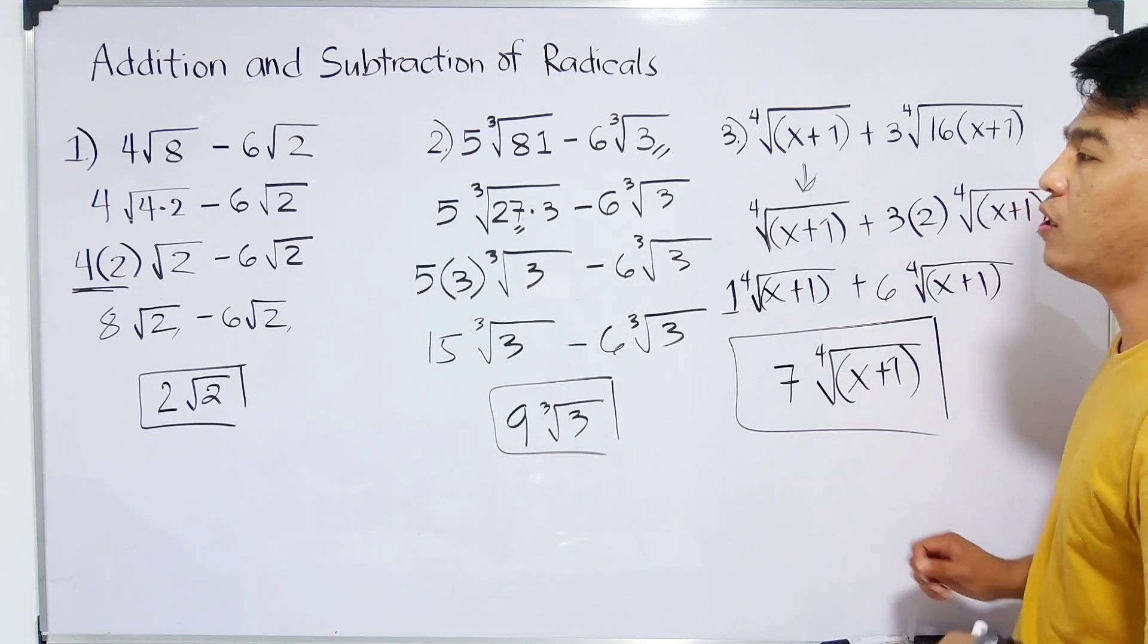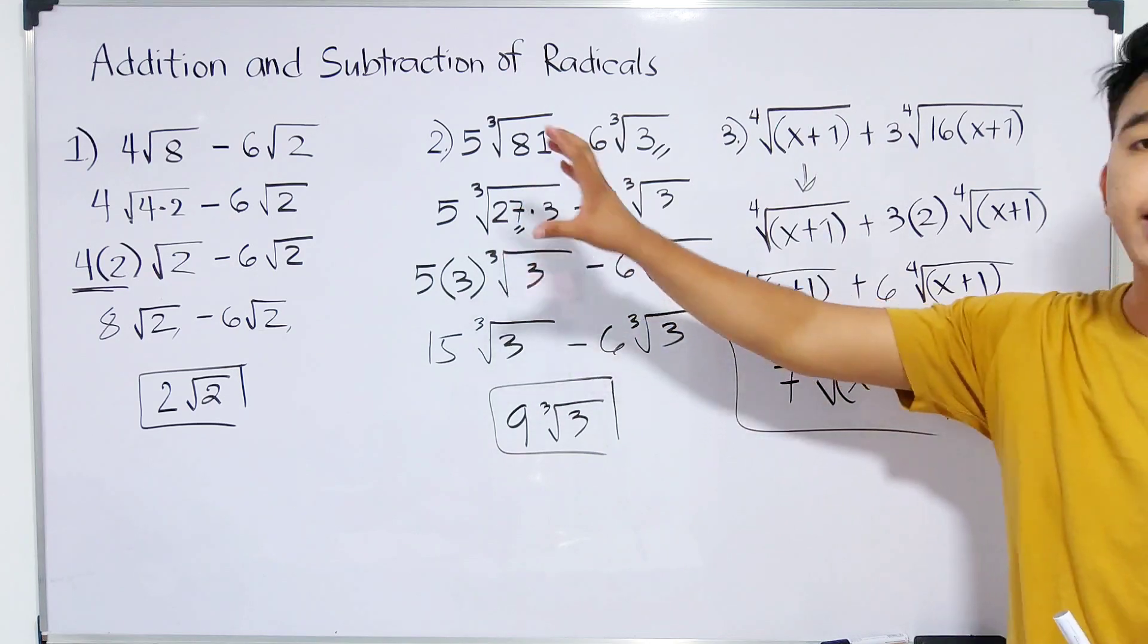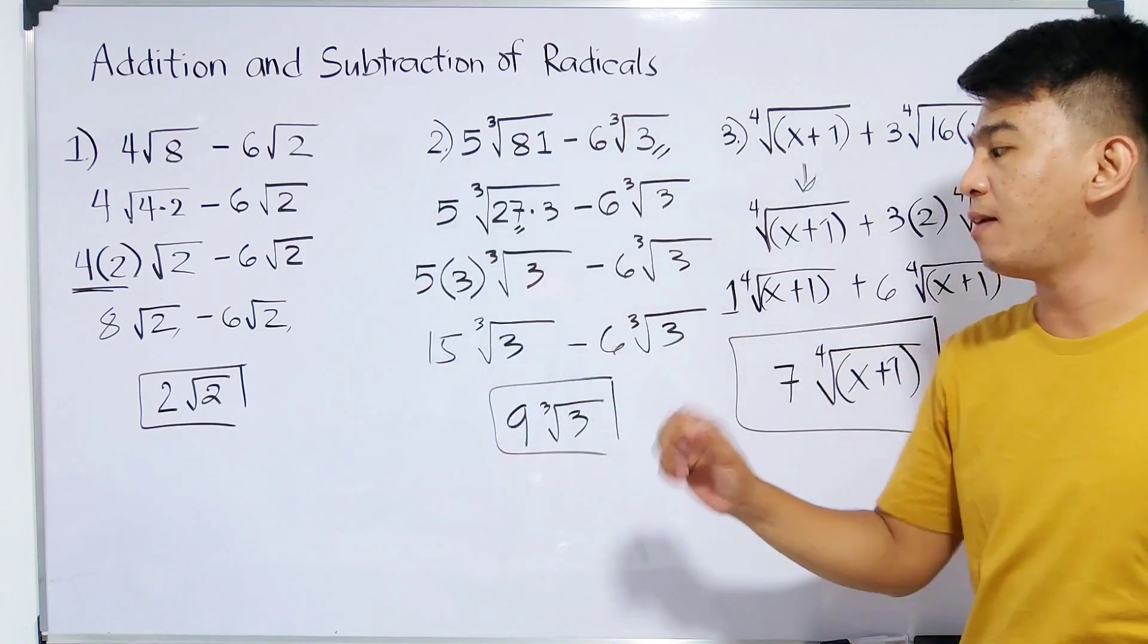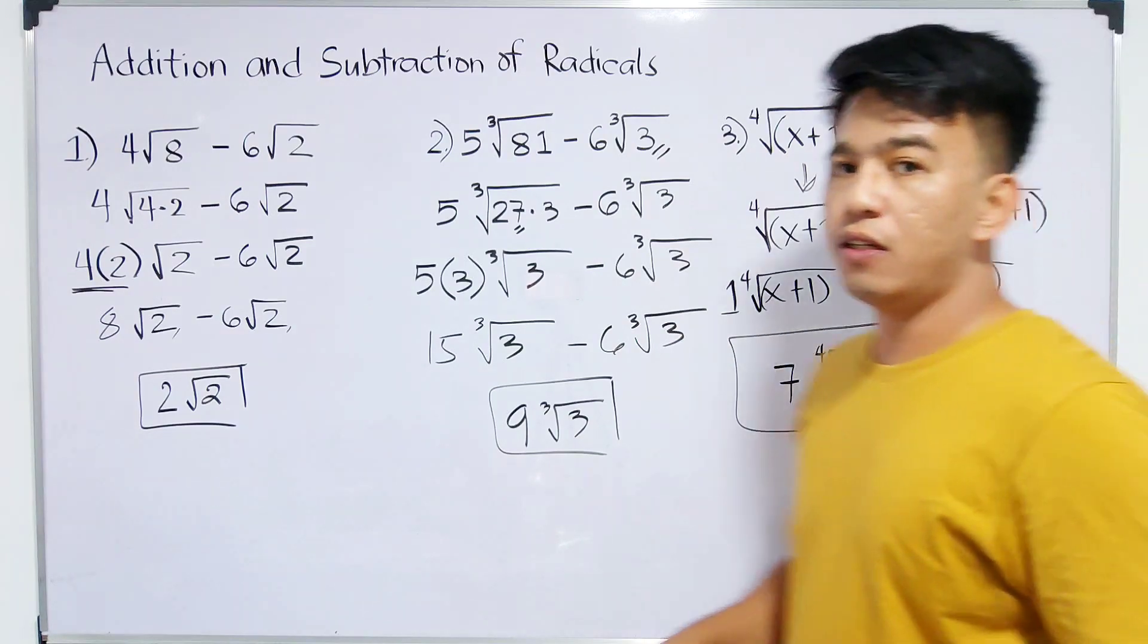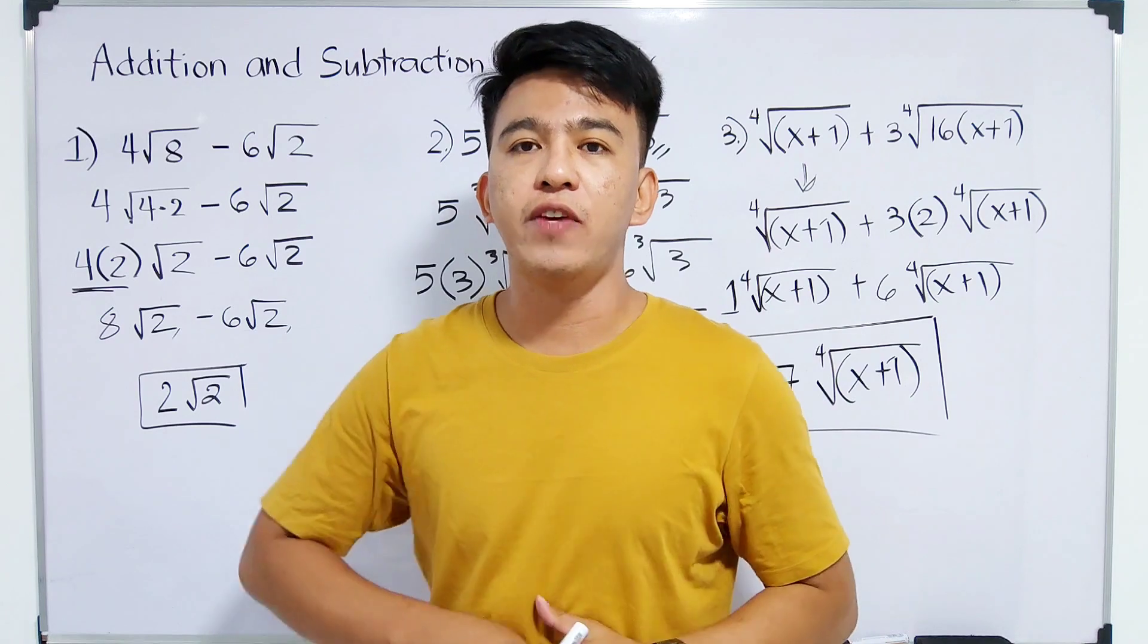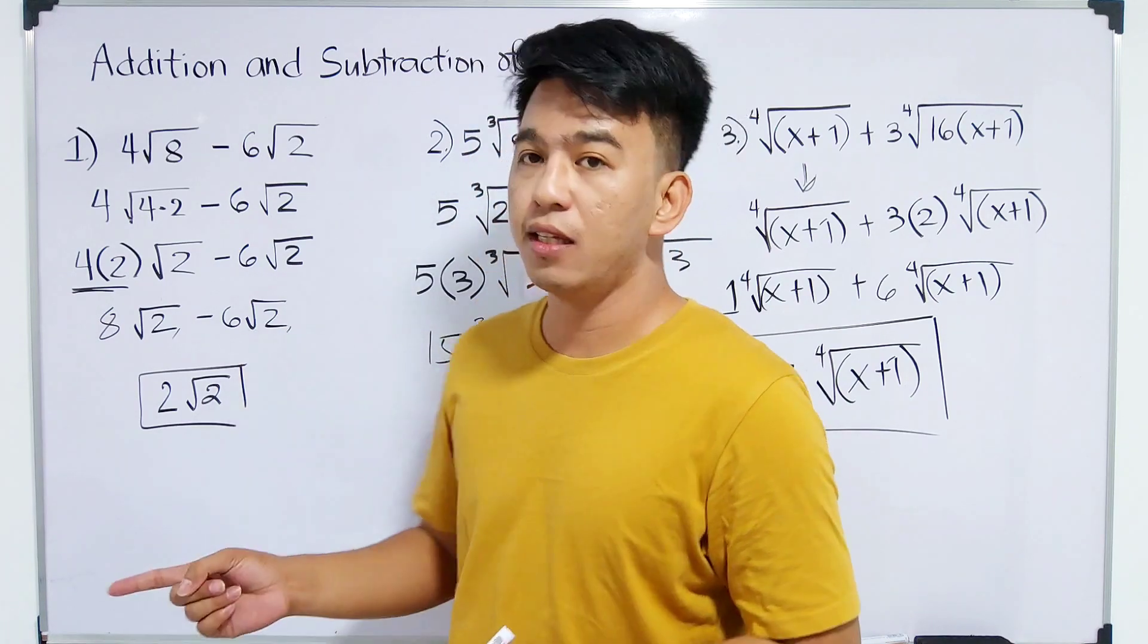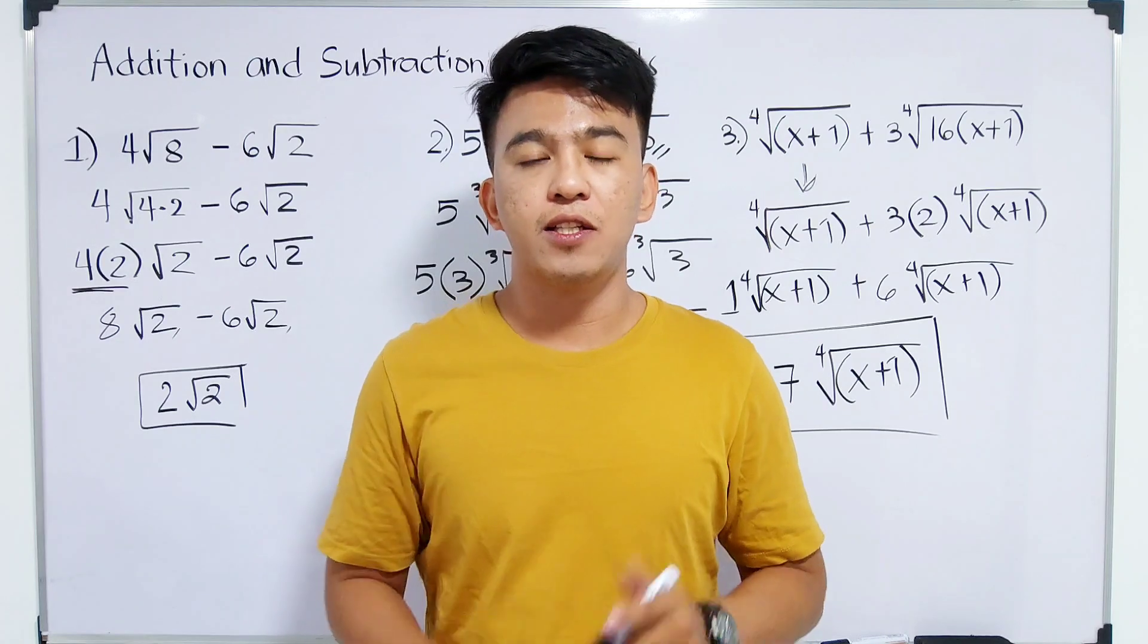So we can add this radical expression. If you properly apply those processes we used from item number 1 and item number 2, you can easily simplify this kind of radical. So that's it, guys. I hope you learned something from this video on how to add and subtract radical expressions with different radicands.